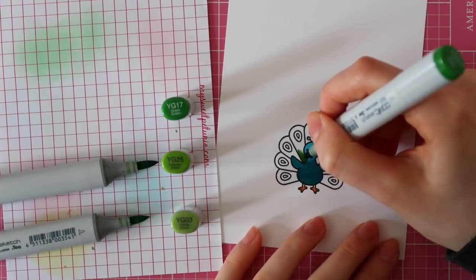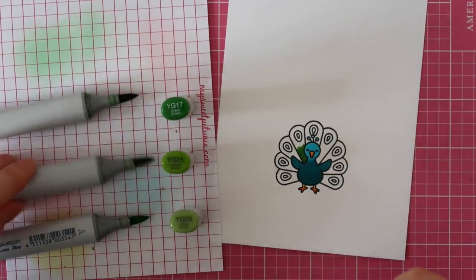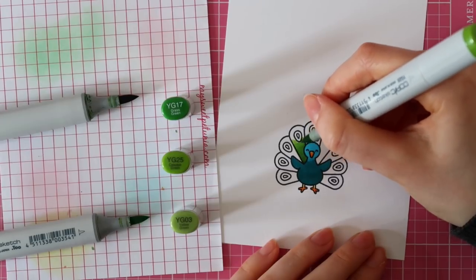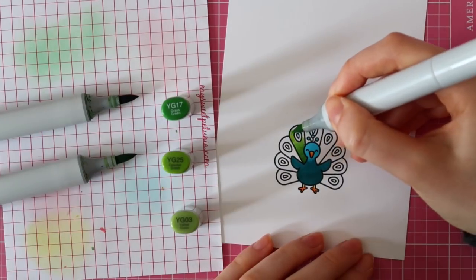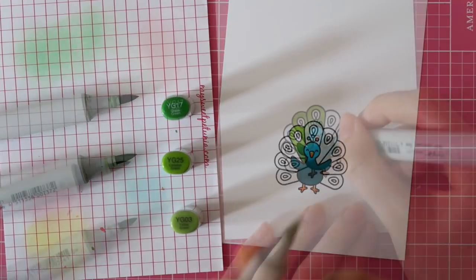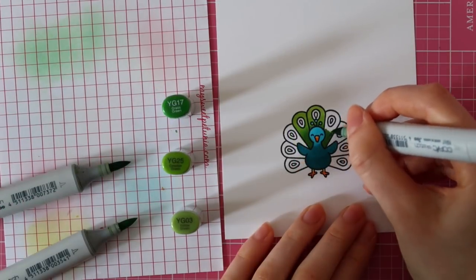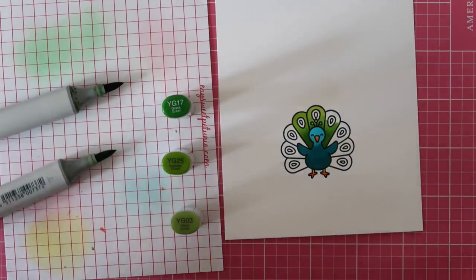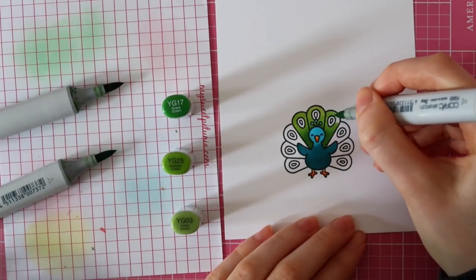For his feathers, I am using YG17, YG25, and YG03. I also used those shades of green to color the other peacocks. I didn't show that on camera because I used the exact same colors and the exact same technique.